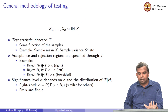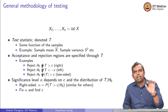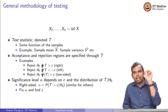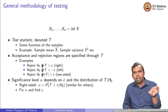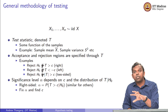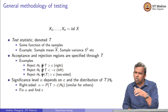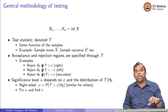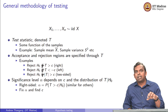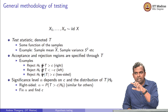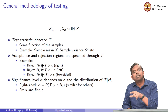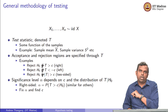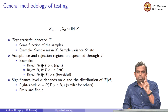So, watch out for this framework: samples, test statistic, acceptance and rejection region in terms of the test statistic — mostly the rejection region — and then computation of significance level alpha, which is the probability of that rejection region given H₀ is true.